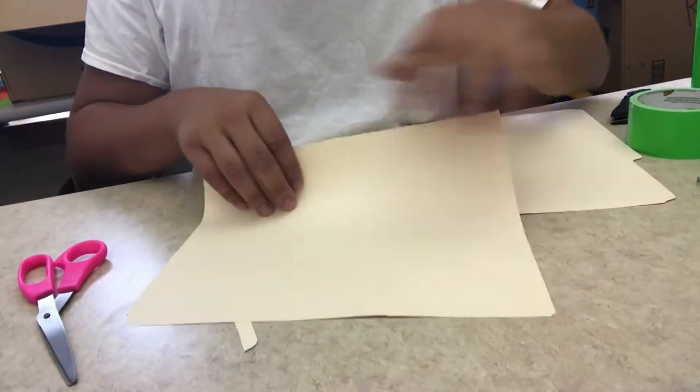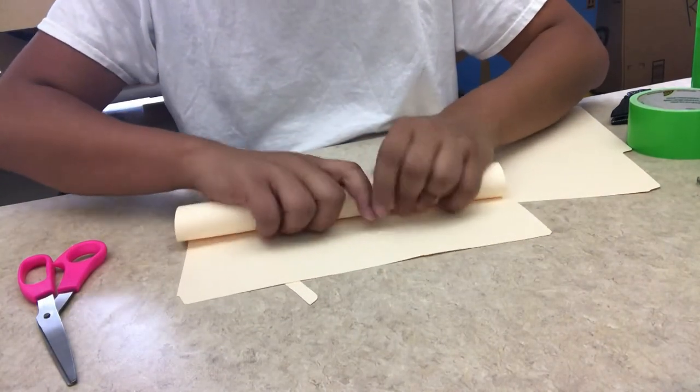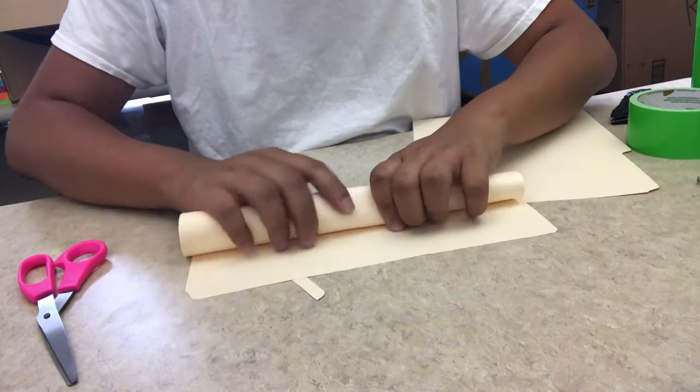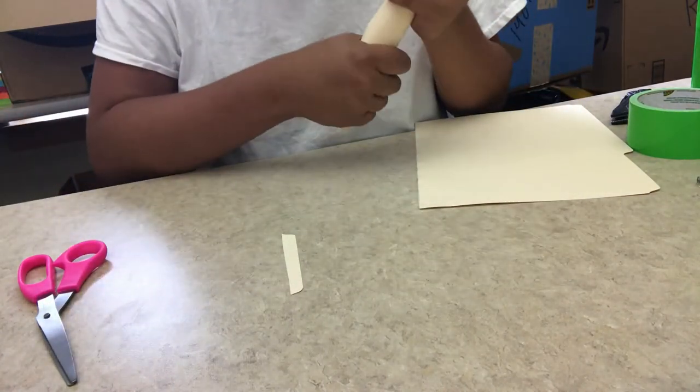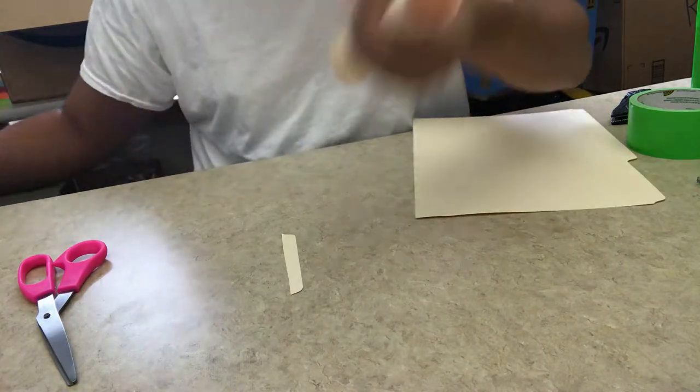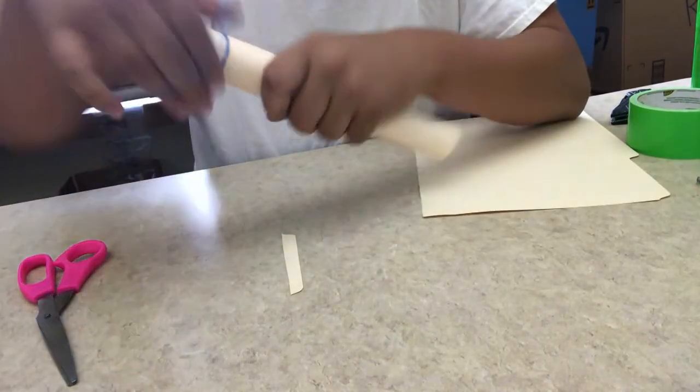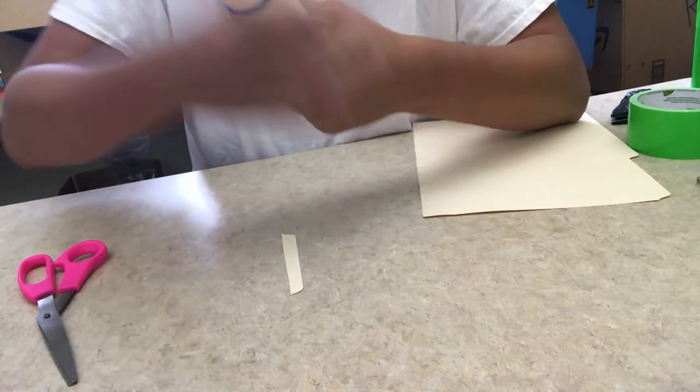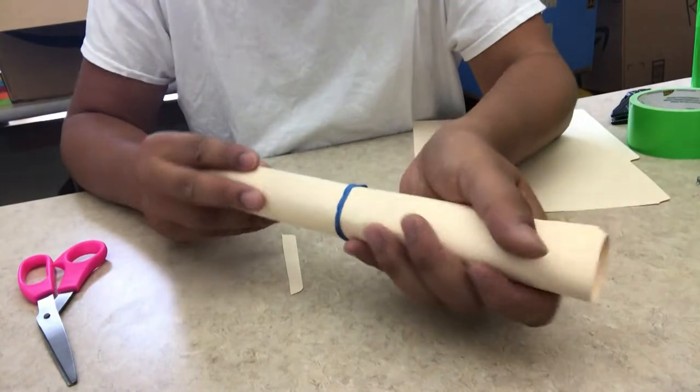After that, you're going to take your manila folder and roll it up into a tube. And then you're going to find some way to fasten that. I've been using rubber bands for this, just to make it a little bit easier. It's a little flappy on the edges, but that's okay.